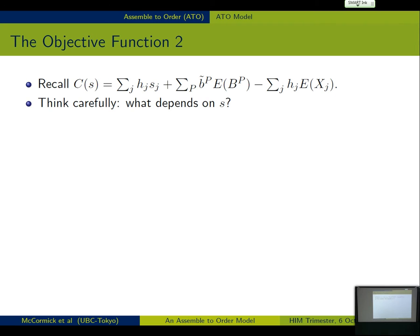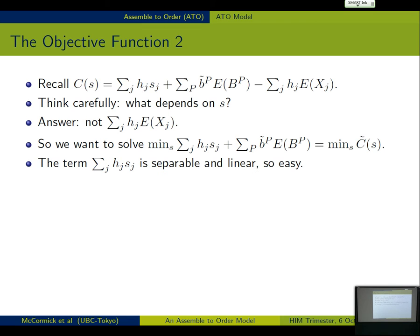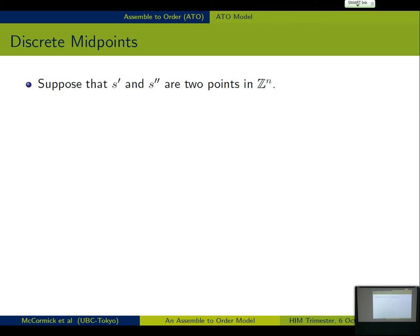So I rewrote it there for your viewing pleasure. So what actually depends on S? S is our decision variable, can we get rid of some stuff? Well, the holding cost on expected demands is something we're going to have to pay no matter what. So that doesn't matter. So we can get rid of that. So we can get the C tilde by deleting that term. That term is linear and separable. It's easy to deal with. We don't have to worry about. So really, that's the one that's going to kill us, is these backorder costs.